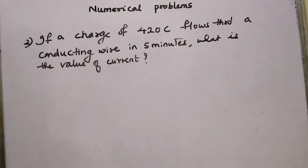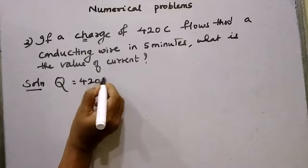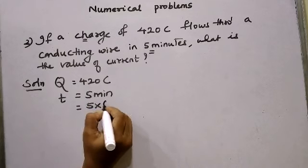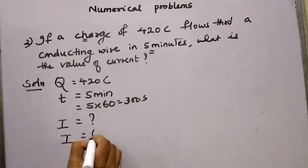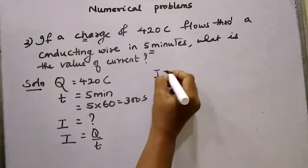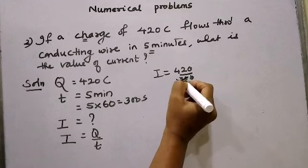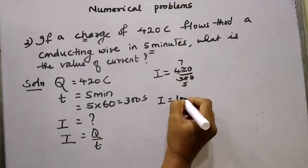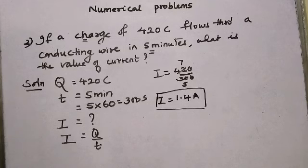Let's take the second question. If a charge of 420 coulombs flows through a conducting wire in 5 minutes, what is the value of current? Charge Q equals 420 coulombs. Time is 5 minutes; converting to seconds: 5 × 60 equals 300 seconds. The formula is I equals Q upon T. Substituting: I equals 420 divided by 300. Simplifying — cancelling common factors — 420/300 equals 7/5. Dividing: I equals 1.4 amperes. If a charge of 420 coulombs flows through a conducting wire in 5 minutes, the current will be 1.4 amperes.